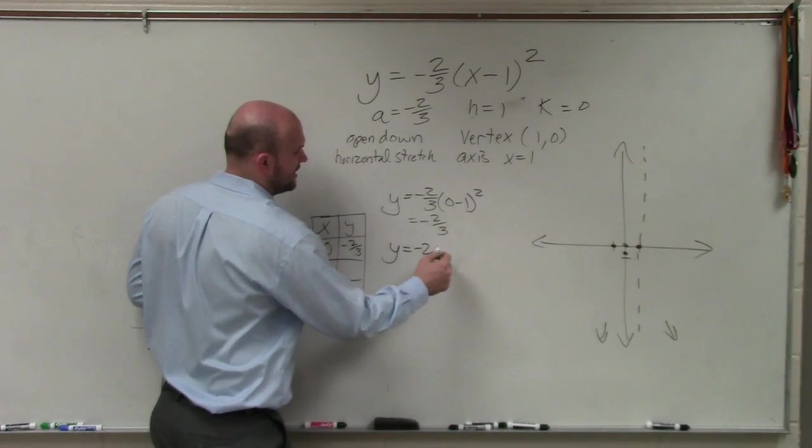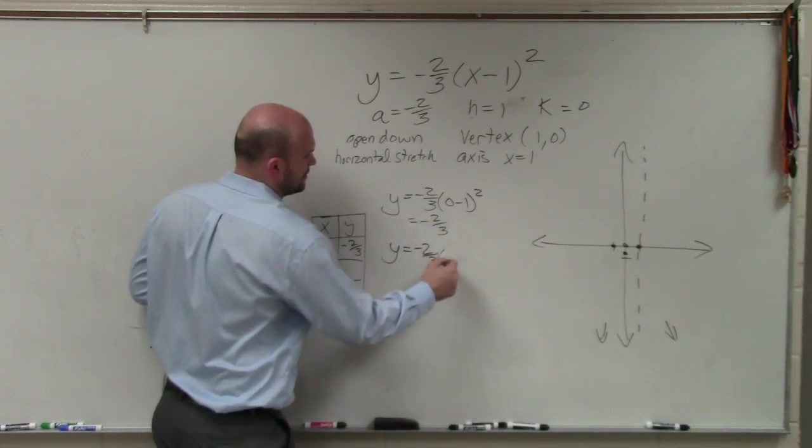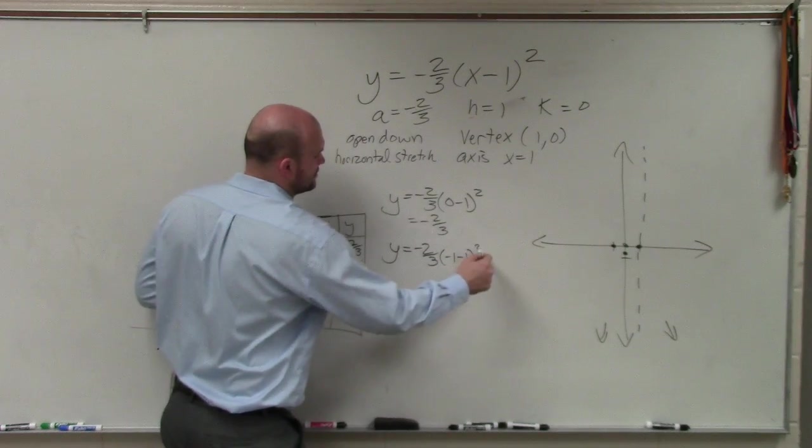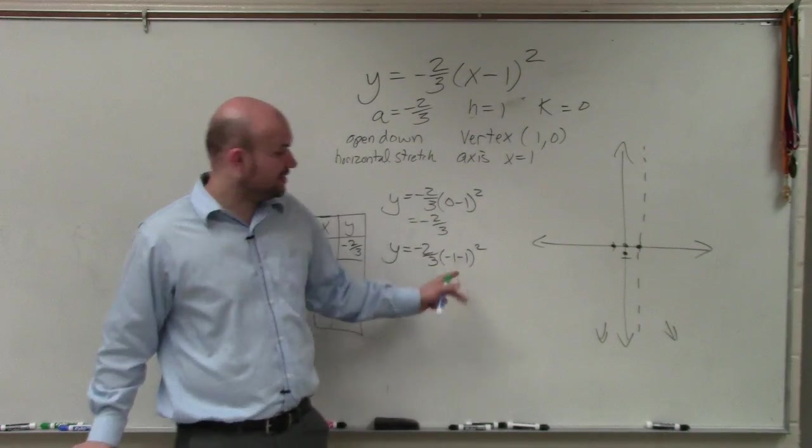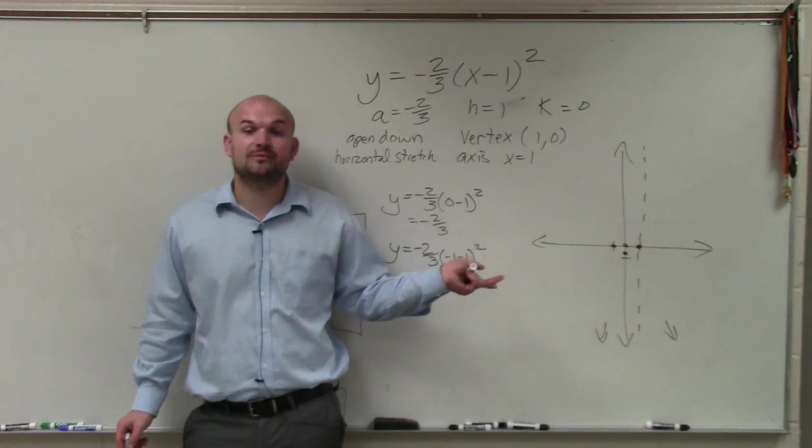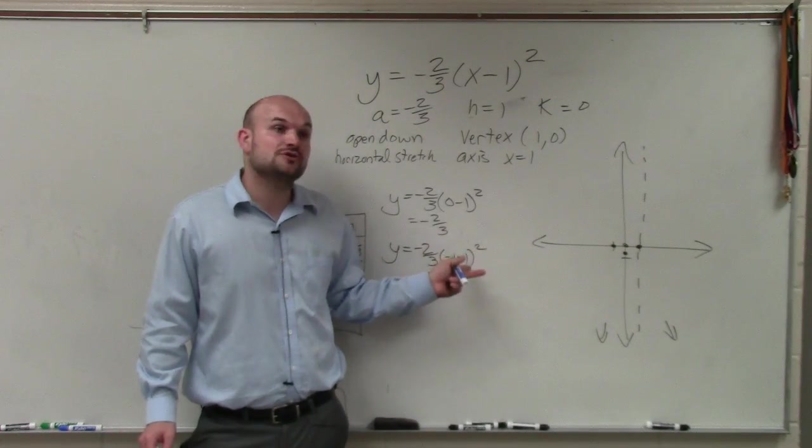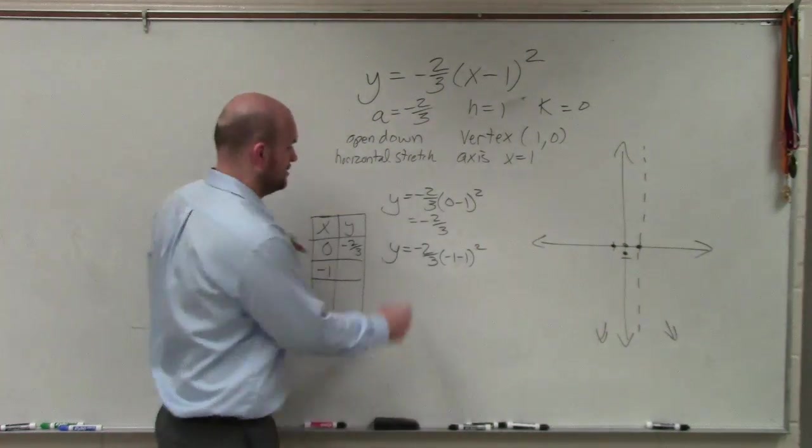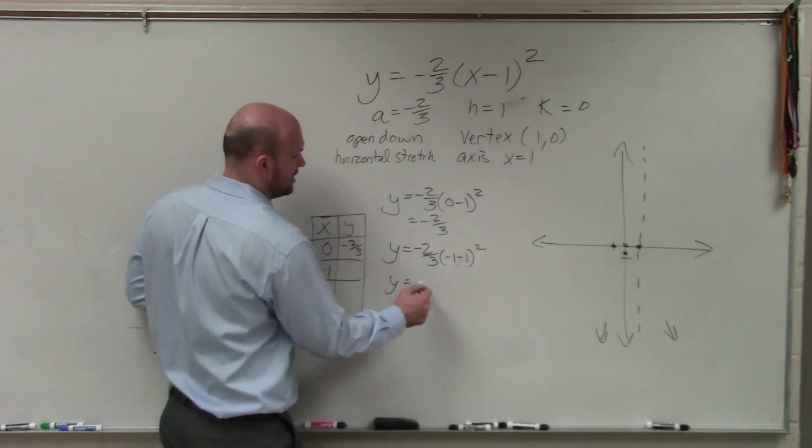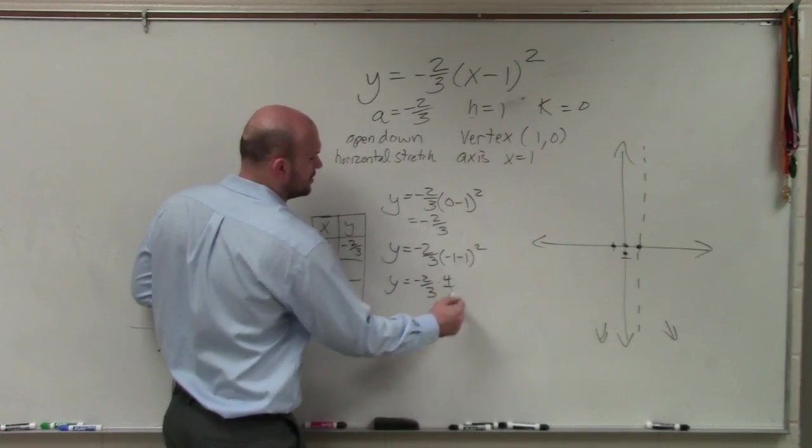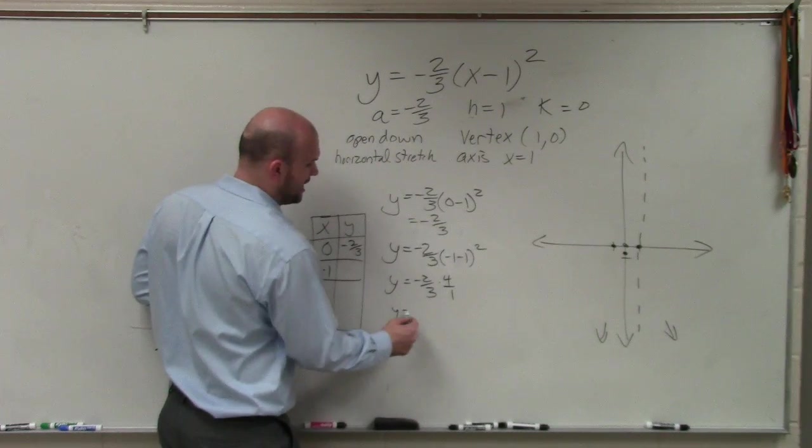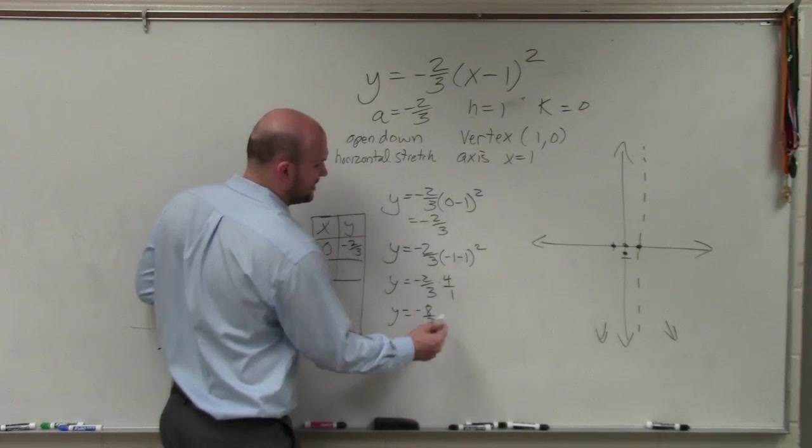y equals, now let's do -1. -2/3 times (-1 minus 1) squared. So if you owe me $1 and you borrow another dollar, you now owe me $2. -2 squared is positive 4. y equals -2/3 times 4. Again, write that as a fraction. So you have y equals -8 over 3.